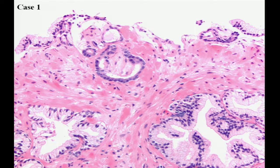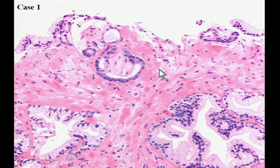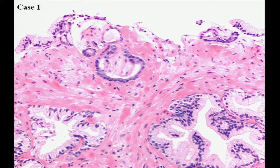So this is the first case. You see several small atypical glands here at the edge of the biopsy. Who thinks that you can make a cancer diagnosis for this case? If you can make a diagnosis of cancer, why?